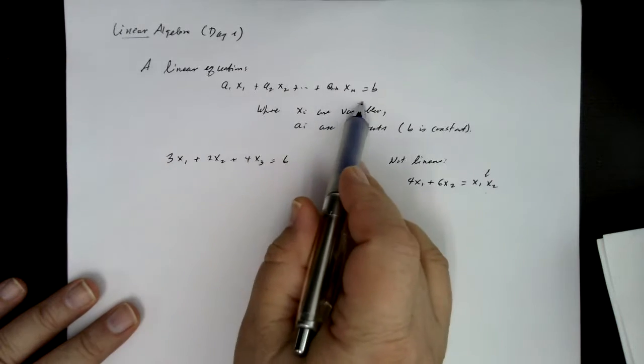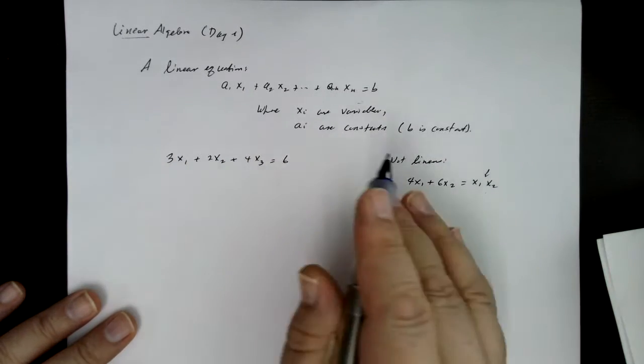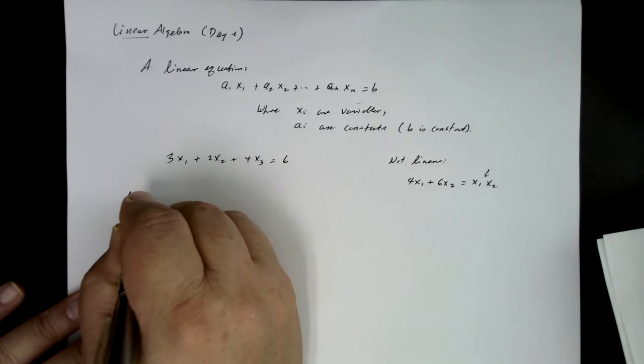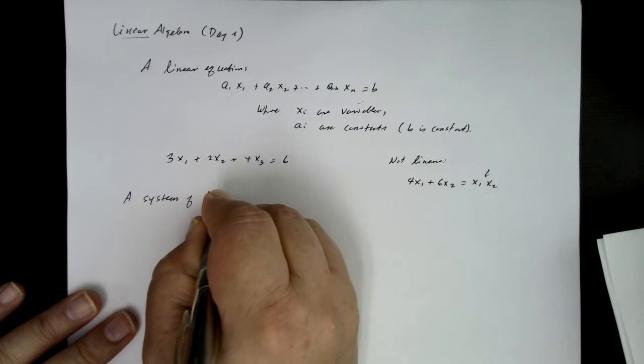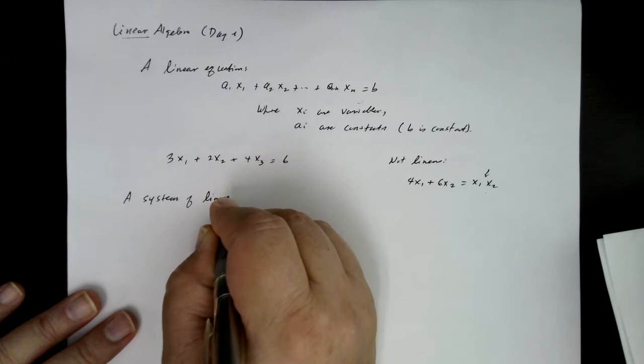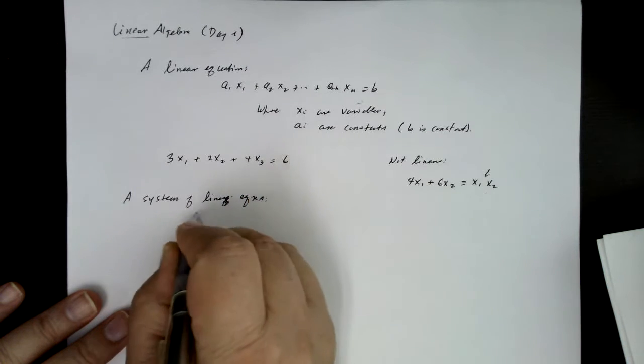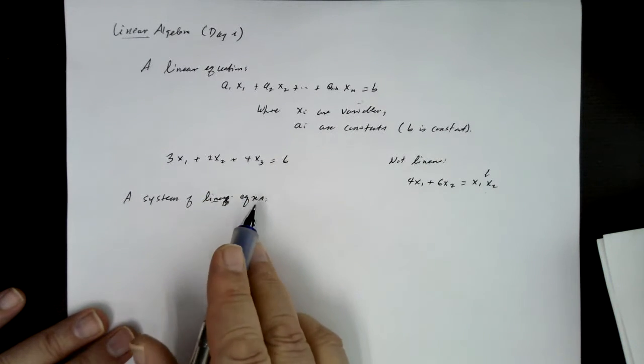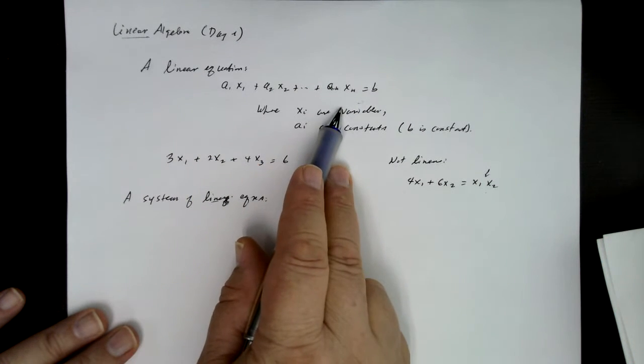Okay, so we're going to be focused on linear equations, and in fact, we're going to be looking at a system of linear equations. A system of linear equations is just a collection of linear equations, but they all have to involve the same set of variables.